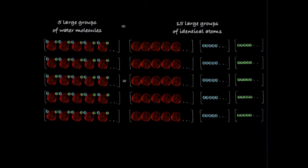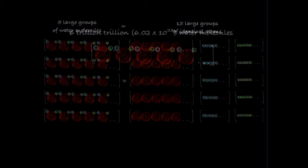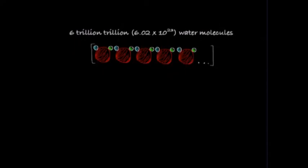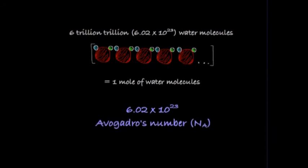How big are these groups? Imagine an extremely large group of six trillion trillion water molecules. We call this a mole of water molecules. Where 6.02 times 10 to the 23 is Avogadro's number.